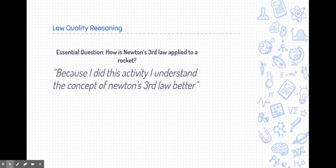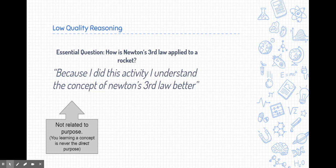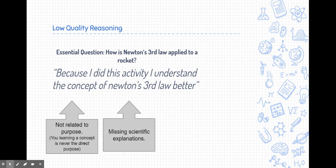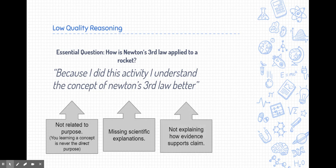All right, here's a low-quality reasoning. Here's an essential question. This isn't pulling from any of the labs that we're going to do, but how is Newton's Third Law applied to a rocket? A student said, because I did this activity, I understand the concept of Newton's Third Law better. This is not related to the purpose. Now, this is a little challenging because, yes, ultimately we're trying to get this student to learn about Newton's Third Law, but if you read the essential question, that's not the direct purpose of this lab. You're never going to use a reasoning statement, or you're never really going to use learning a concept as a direct purpose. This reasoning is also missing scientific explanations. They threw in the word Newton's Third Law, but they didn't explain the law. And they also didn't explain how it supports their claim or how their evidence supports their claim, which is one of the most important parts.